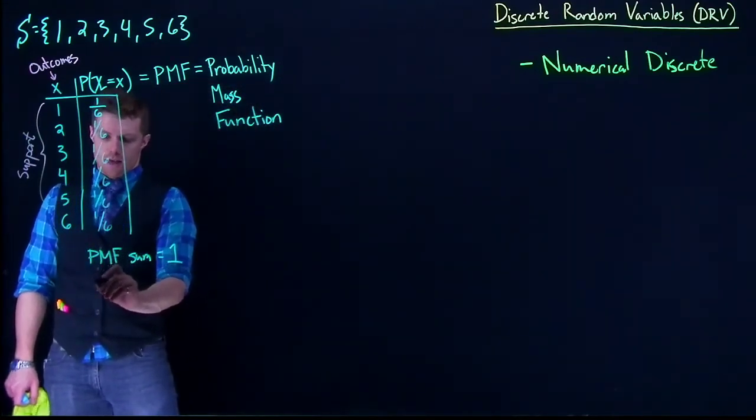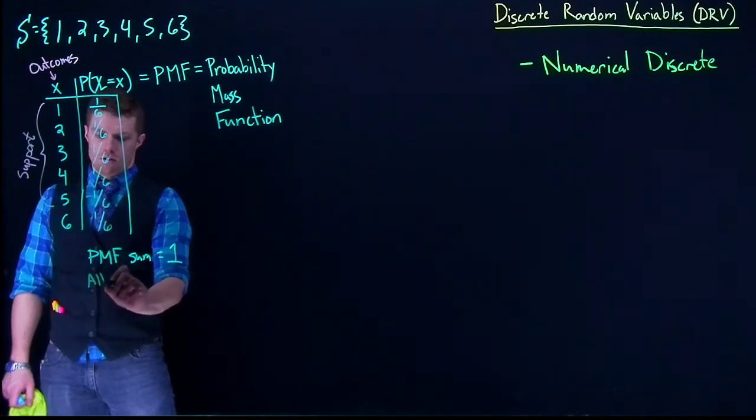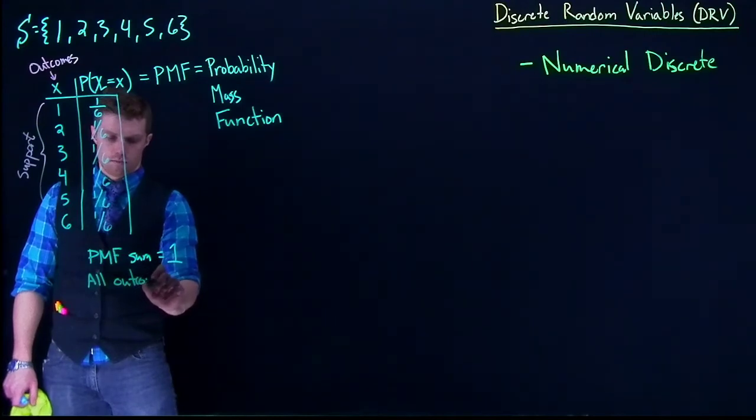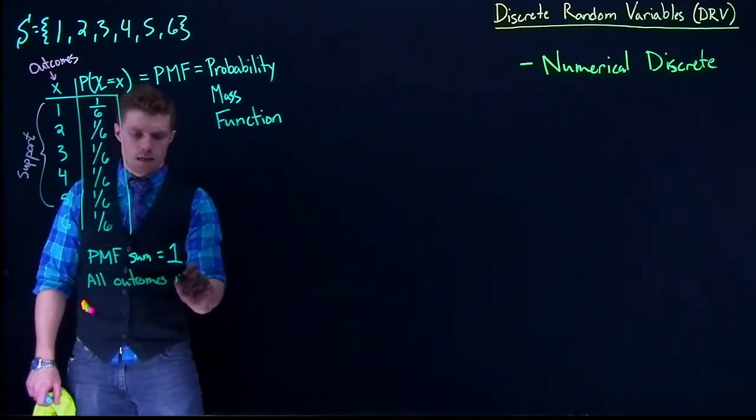Another one is that all outcomes need a probability.